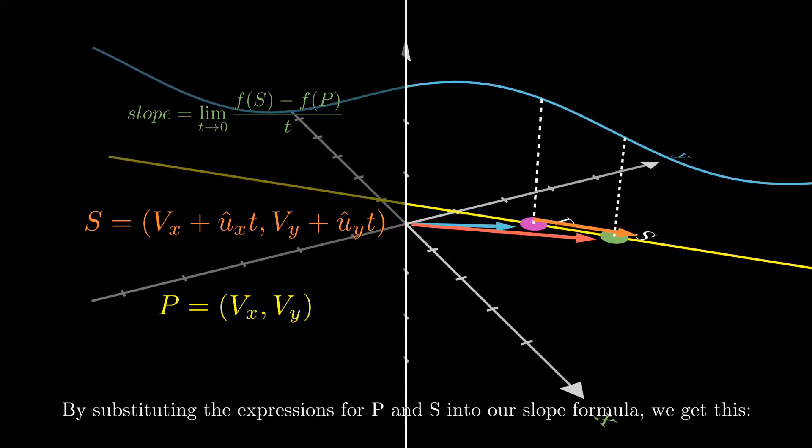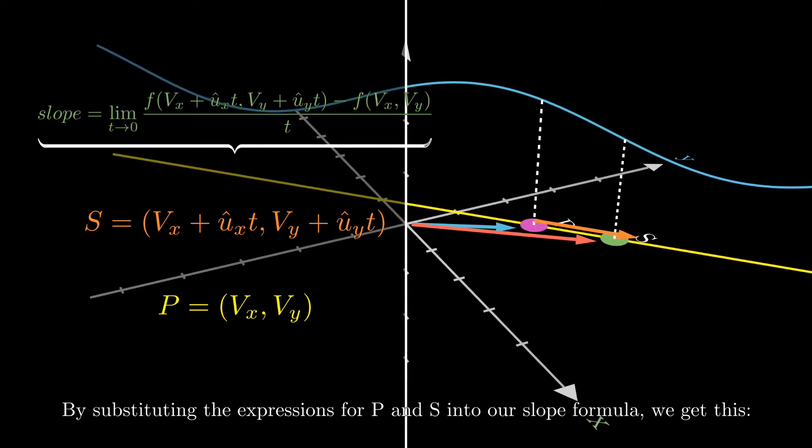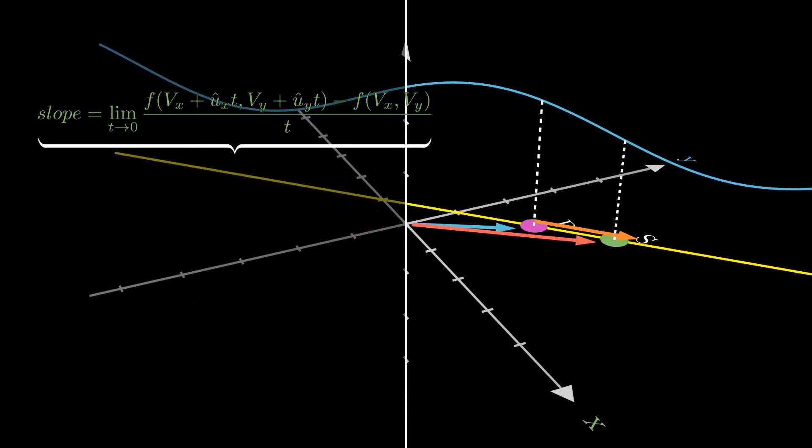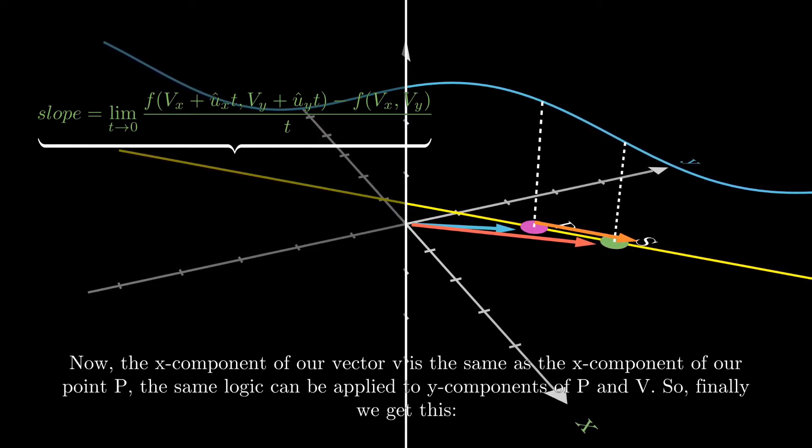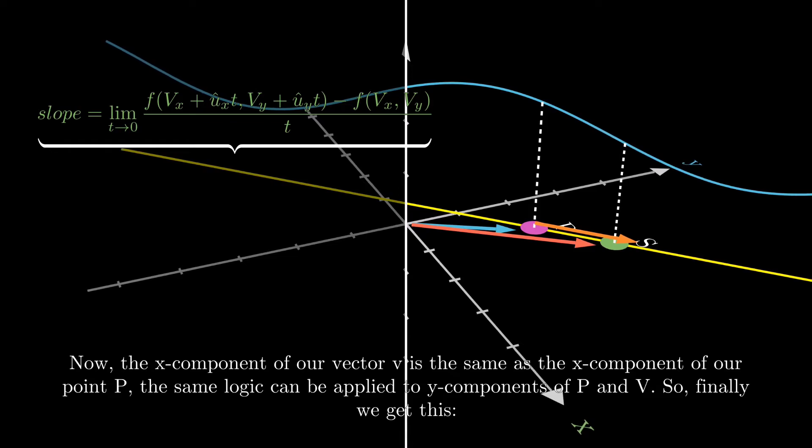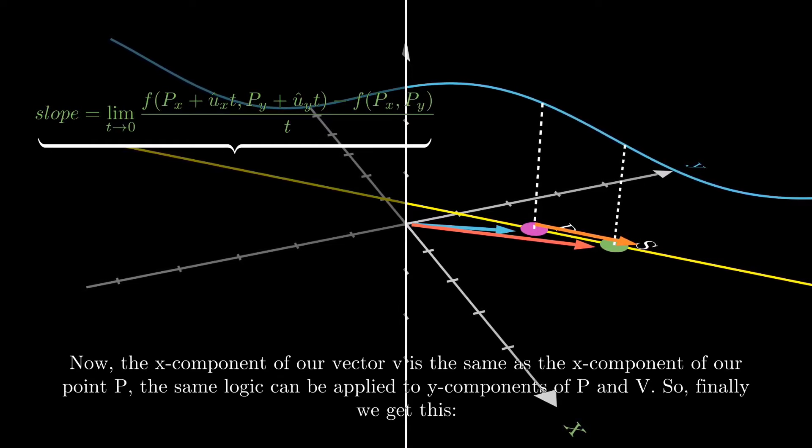By substituting the expressions of P and S into our slope formula we get this. Now, the x-component of our vector V is the same as the x-component of our point P. The same logic can be applied to the y-component of P and V. So finally we get this.